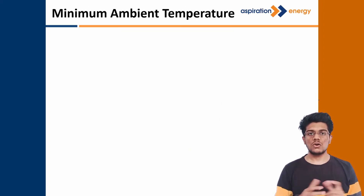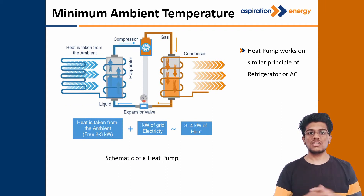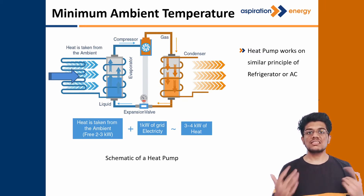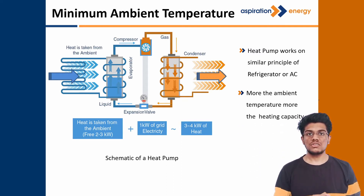You all know how a refrigerator or AC works — the heat pump works on a similar principle. As you can see, the schematic shows the working of an air source heat pump. The ambient air acts as a heating source. The refrigerant absorbs heat from the ambient air and rejects it to the processing field whose temperature is required to be raised. More than the ambient temperature, more heat is rejected by the refrigerant to the processing field.